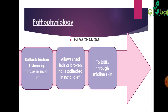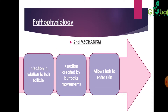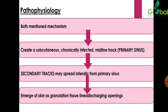The pathophysiology involves two mechanisms. First: buttock friction plus shearing forces in the natal cleft allow shed or broken hairs collected in the natal cleft to drill through midline skin. Second mechanism: infection in relation to the hair follicle — suction created by buttocks movement allows hair to enter the skin. Both mechanisms create a subcutaneous chronically infected midline tract — this is the primary sinus. Secondary tracts may spread laterally from the primary sinus, emerging at the skin as granulation tissue-lined discharging openings.